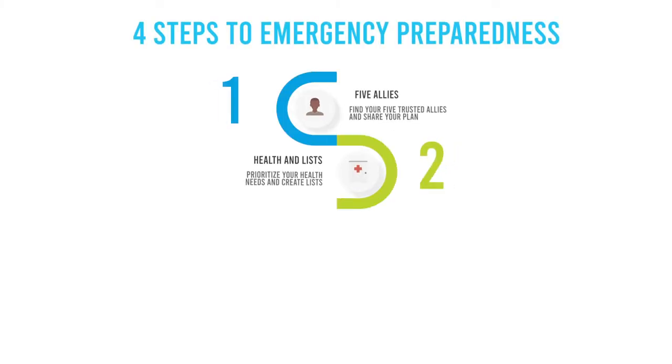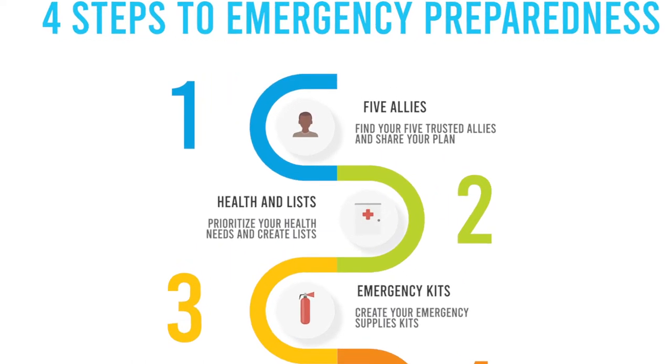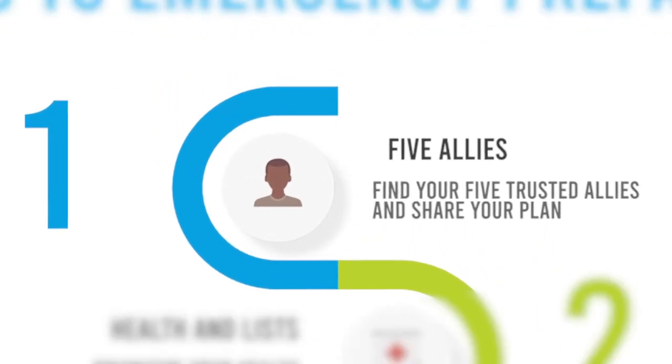Four Steps to Emergency Preparedness. Step 1: Find your five trusted allies and share your plan.